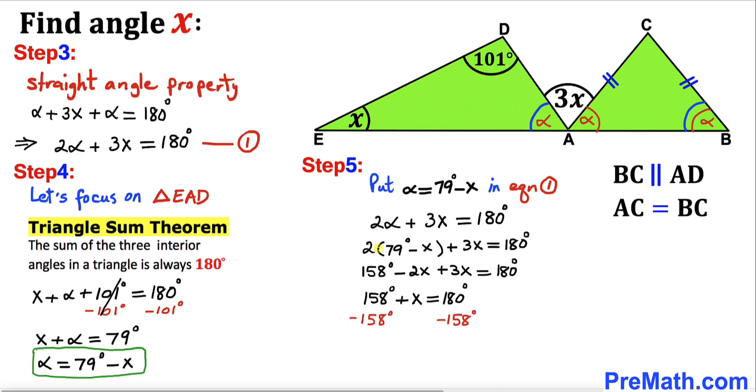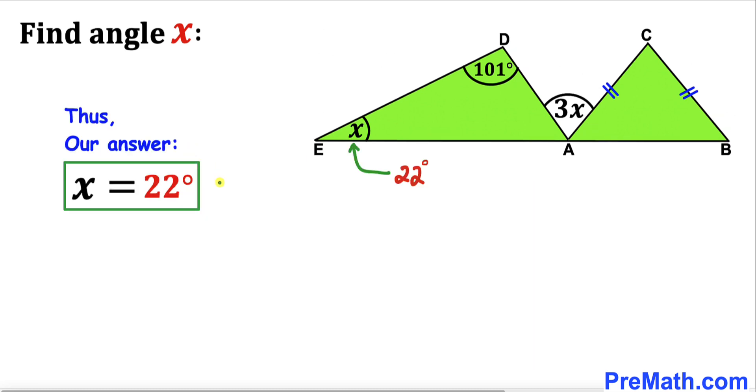Now let's subtract 158 from both sides, so therefore our angle x turns out to be 22 degrees. Thus, our angle x is 22 degrees. Thanks for watching, and please don't forget to subscribe to my channel for more exciting videos. Bye!